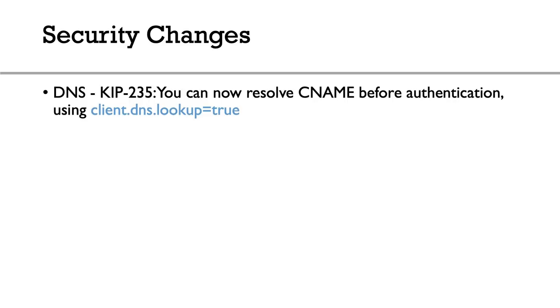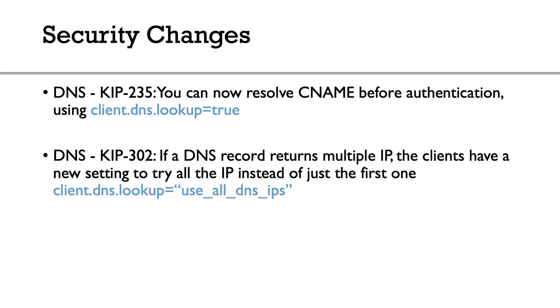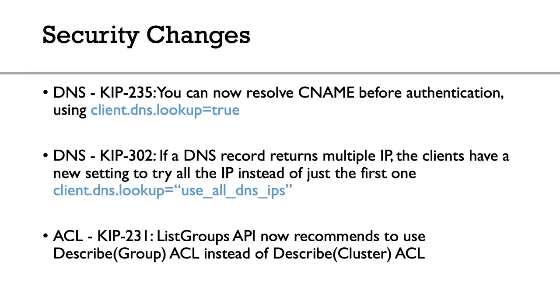Security has had some great changes. KIP-235 allows resolving a CNAME before authentication by setting `client.dns.lookup=true`, which is smarter DNS handling even in secure environments. KIP-302 handles the case where a DNS record returns multiple IPs — the client can now resolve and try all IPs one by one instead of just the first, enabling round-robin DNS for clients using `client.dns.lookup=use_all_dns_ips`. Also, for the list group API, you now only need a describe group ACL instead of the more powerful describe cluster ACL.